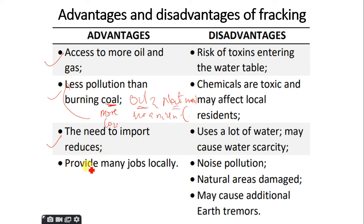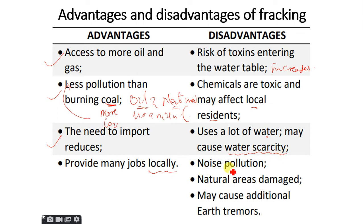The need to import fuel reduces and fracking provides more jobs locally for miners. However, the risk of toxins entering the water table increases because the chemicals mixed with water require purification. The chemicals are toxic and may affect local residents, and a large amount of water is used, which may cause water scarcity in the area. The pumping at high pressure also causes noise pollution, and natural areas become damaged because vegetation must be cleared.